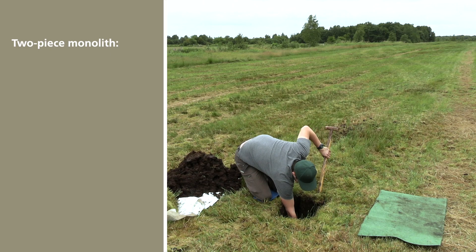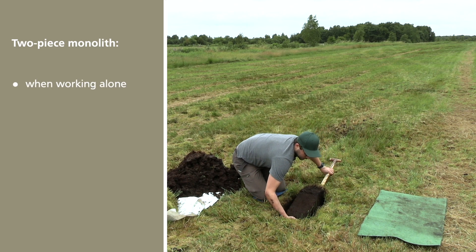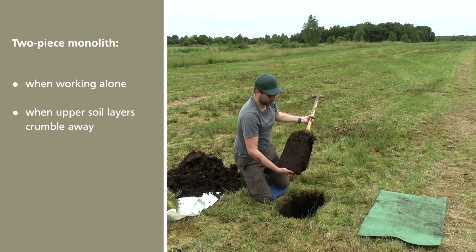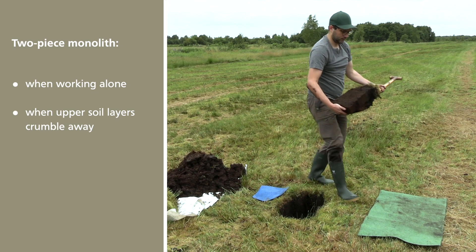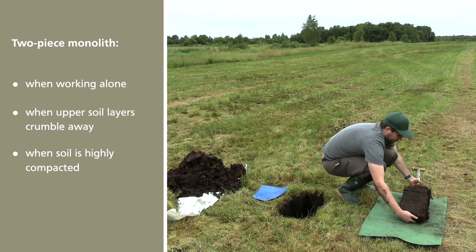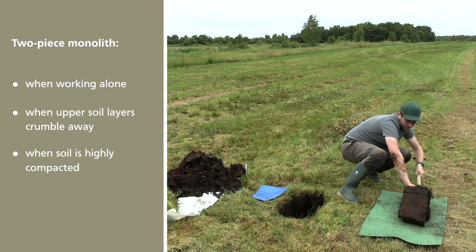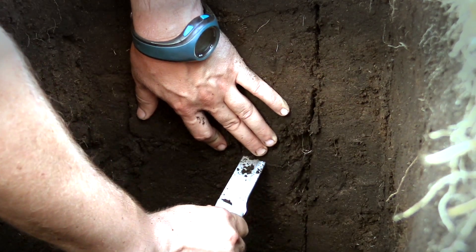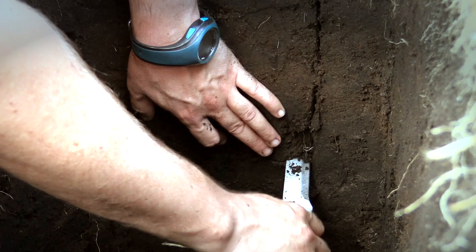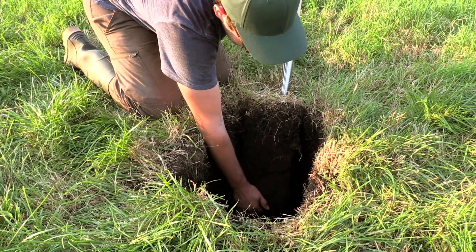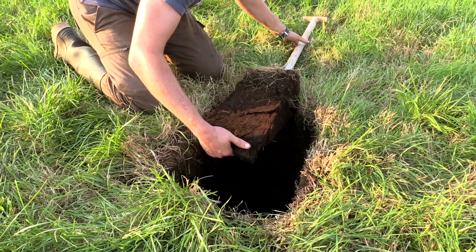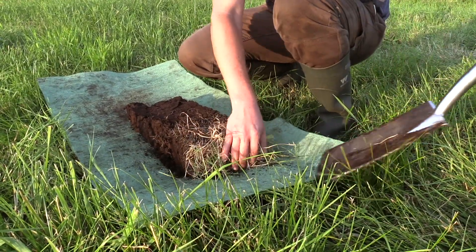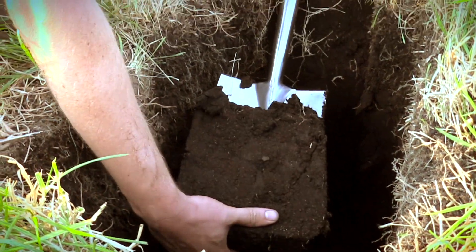There are, however, situations when the monolith can only be removed from the profile wall in two pieces. This is the case, for instance, when you are working alone and it is impossible to reach so deeply into the pit. Or when the soil structure in the upper layers crumbles away — in this case, it is better to have the spade on the back side so that the soil stays together. Or when the soil is highly compacted and you won't be able to push the spade in that deeply anyway. In these cases, you should include a second horizontal cut at 40 cm depth. At this depth the soil structure usually doesn't consist of fine aggregates, so you can easily differentiate between natural aggregate surfaces and cut surfaces. Push the spade at most 40 cm into the soil, then lift the upper part of the monolith out while stabilizing the outer side with your hand. The upper part is laid down on the prepared surface, and the same process is repeated for the bottom 20 cm of the monolith.